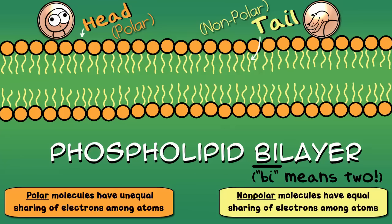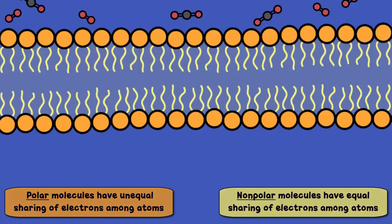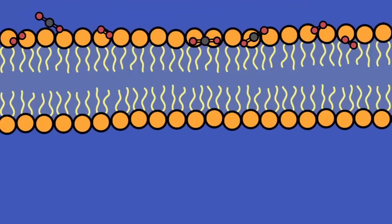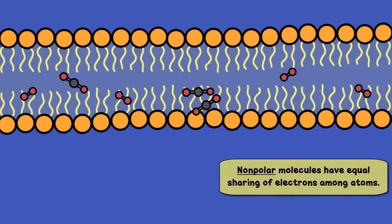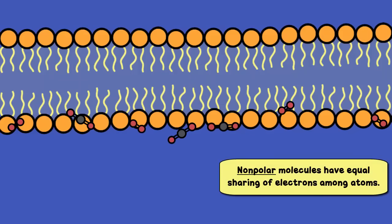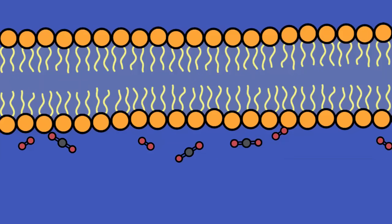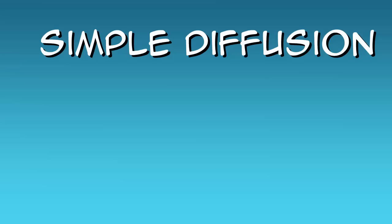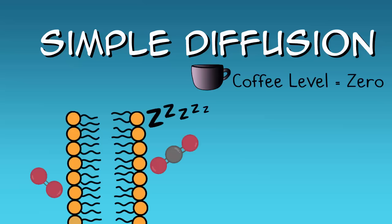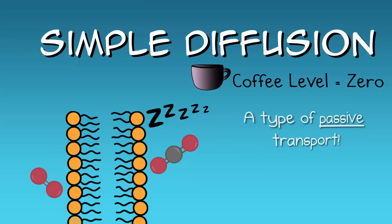Some molecules have no problem going through the cell membrane and directly go through the phospholipid bilayer. Very small, nonpolar molecules fit in this category. Like some gases—oxygen and carbon dioxide gas—those are great examples. This is known as simple diffusion. It doesn't take any energy to force those molecules in or out, so it's known as passive transport.